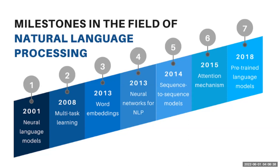In 2008, multitask learning — meaning multiple learning tasks are solved at the same time — was adapted in the NLP field. These tasks include named entity tagging, like person, location, and object of a word.